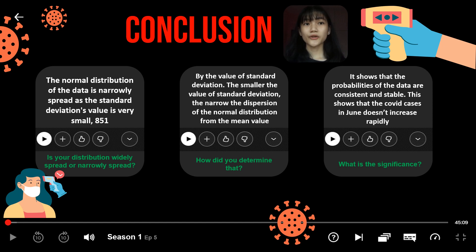In conclusion, the normal distribution of the data is narrowly spread as the value of the standard deviation is very small, which is 851. We determine it based on the value of the standard deviation. The smaller the value of the standard deviation, the narrower the dispersion of the normal distribution from the mean value.